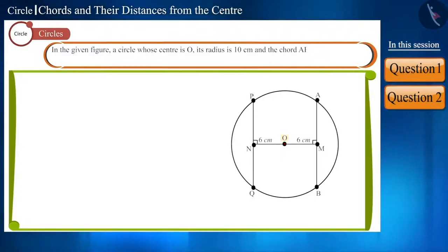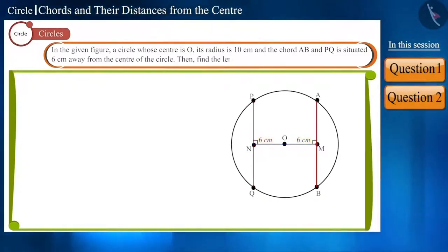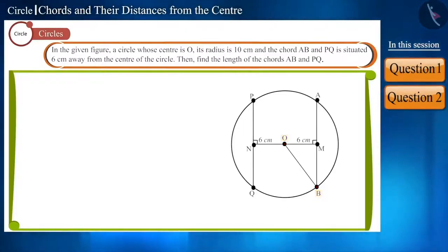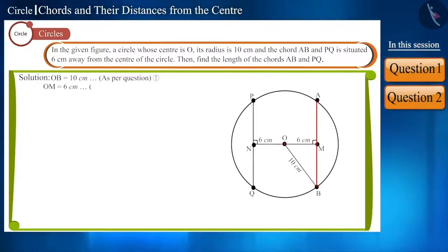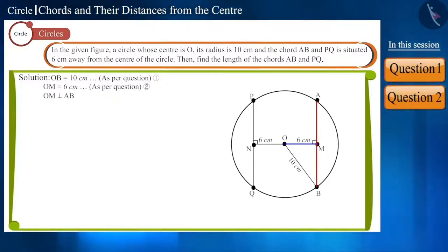Let's move forward and solve one more question. In the given figure, a circle whose center is O has a radius of 10 cm, and the chords AB and PQ are situated 6 cm away from the center of the circle. Find the length of chords AB and PQ. If we join center O and point B, we obtain OB, which is the radius of this circle, so OB is equal to 10 cm. Also, chord AB is situated 6 cm from the center, meaning OM is perpendicular to chord AB with length 6 cm.